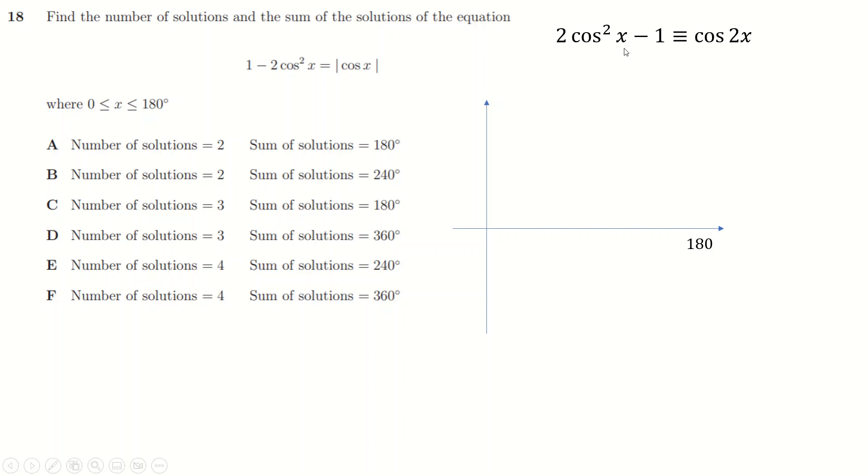Both of these things I can sketch. cos x between 0 and 180 looks like this: it starts up at 1 and heads down to here. This is a pretty terrible sketch but it's fine, it's just a sketch. So -cos x is obviously flipped in the x-axis—it looks like this.